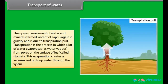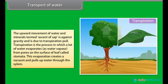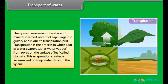The upward movement of water and minerals, termed ascent of sap, is against gravity and is due to transpiration pull. Transpiration is the process in which a large amount of water evaporates as water vapor from pores on the surface of the leaf called stomata. This evaporation creates a vacuum and pulls water up through the xylem.